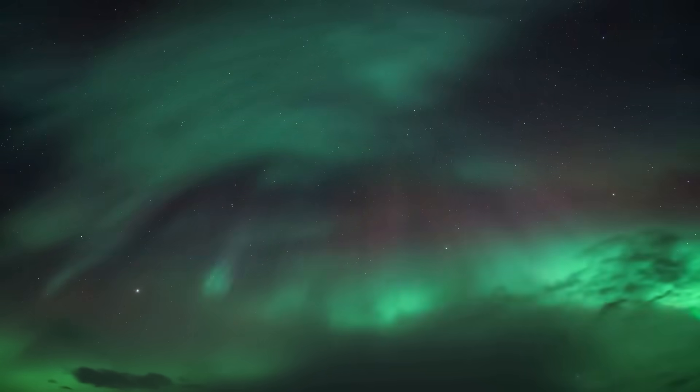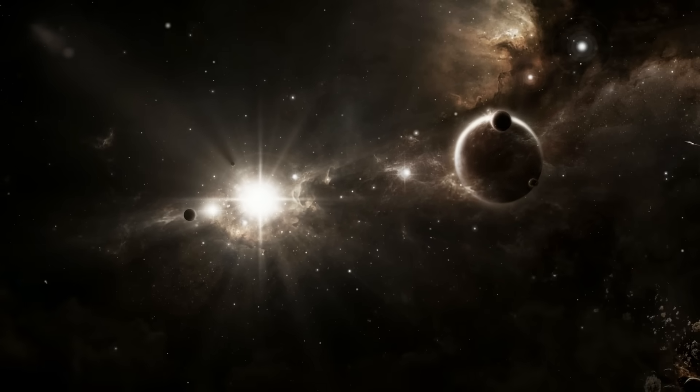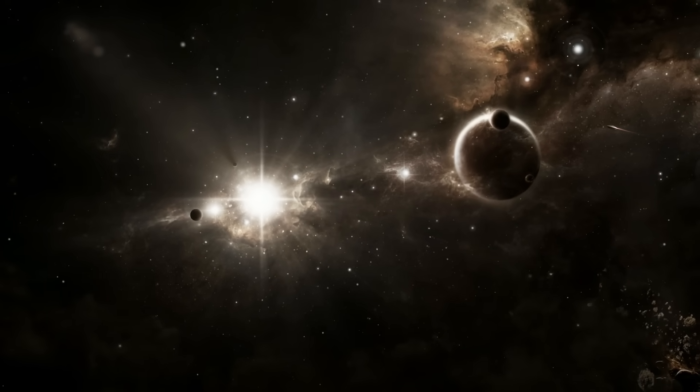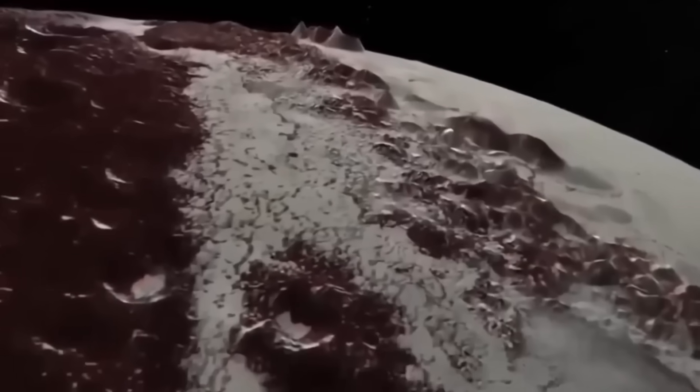It was light, faint, rhythmic, and unmistakably structured. At first, scientists assumed it was reflected sunlight from Charon, Pluto's massive moon. But the geometry didn't fit.